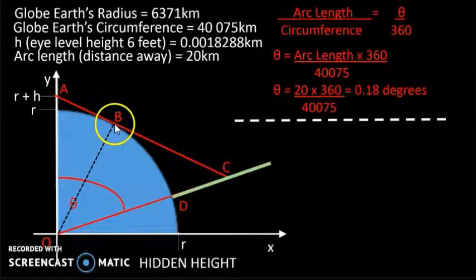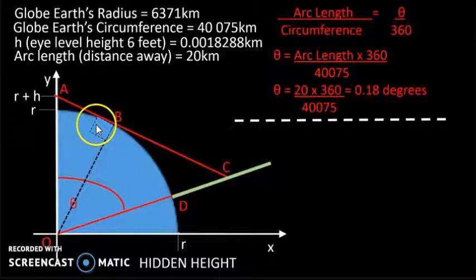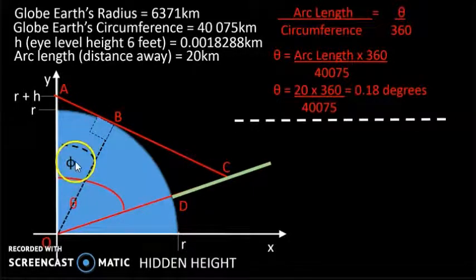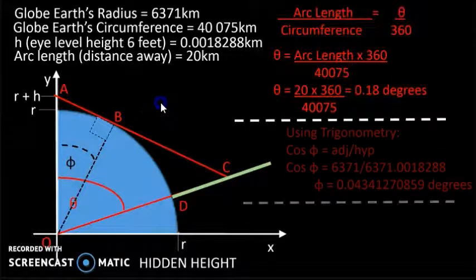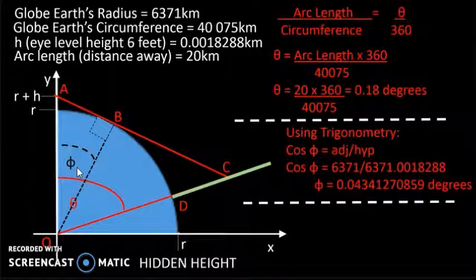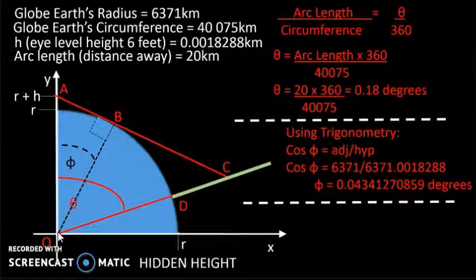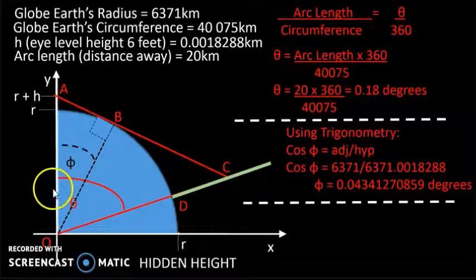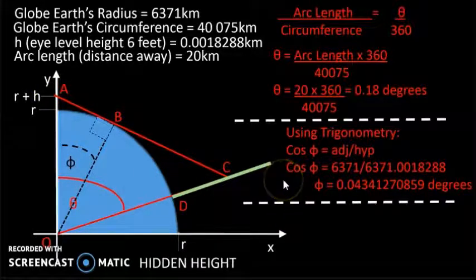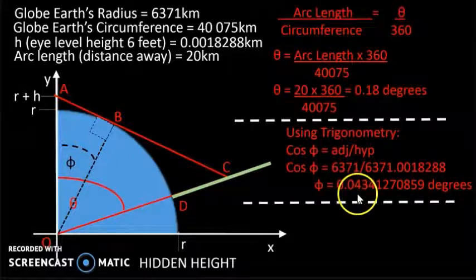Now we can draw a line from the tangent to the circle to the centre, and this would form a right angle triangle. This angle here we can label it as phi. Again we can use trigonometry to find what this angle is, and this angle is given by the adjacent divided by the hypotenuse. The adjacent is equal to the radius of the earth, and the hypotenuse is the radius plus the height of the observer. So we carry out that calculation and we get phi equals 0.0434 degrees.